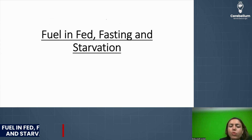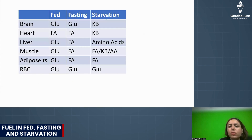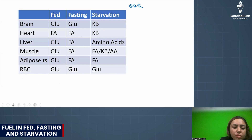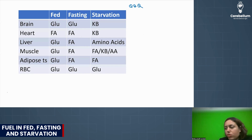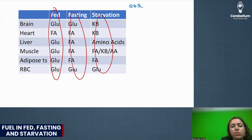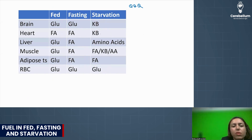This is the table of fuel required in fed, fasting, and starvation — a very important high-yielding table. Right now I need your focus; I'll help you learn it now and later you just have to revise. There are three columns: fed, fasting, and starvation.